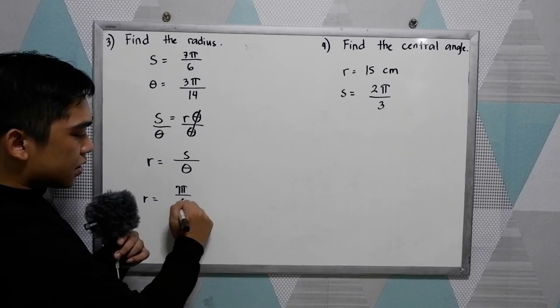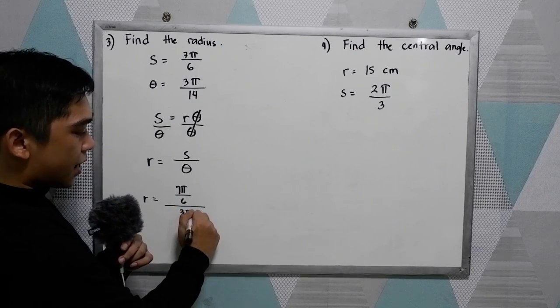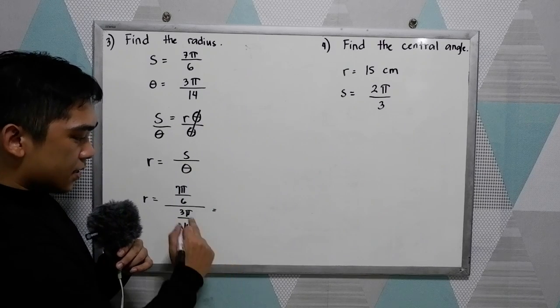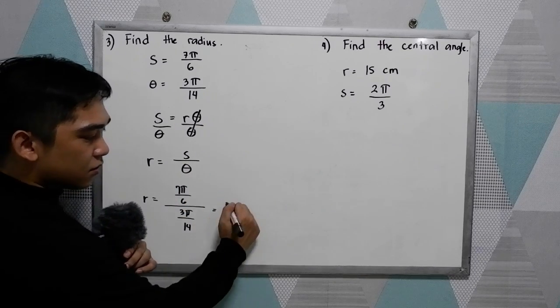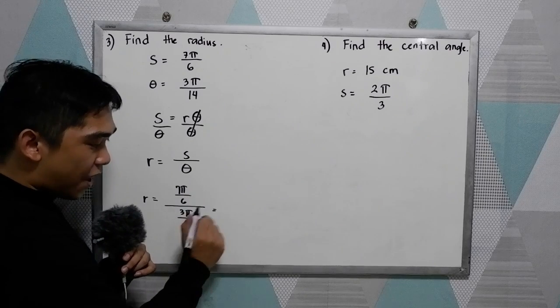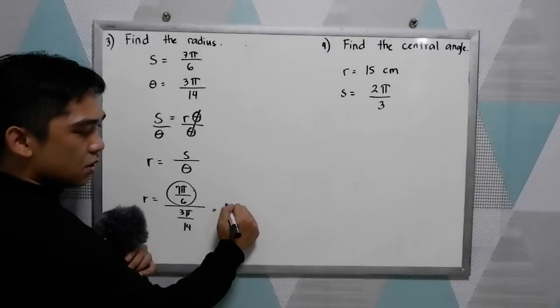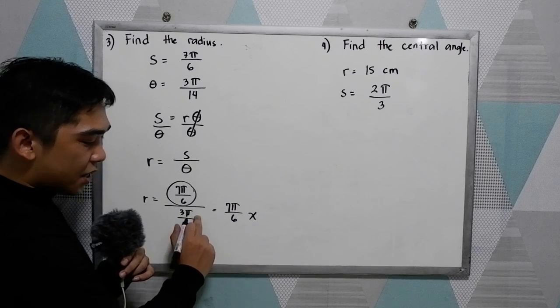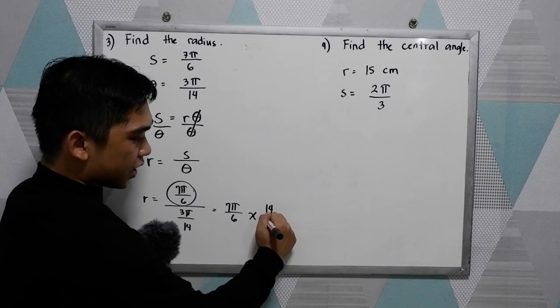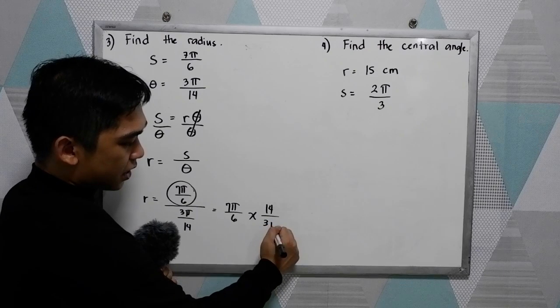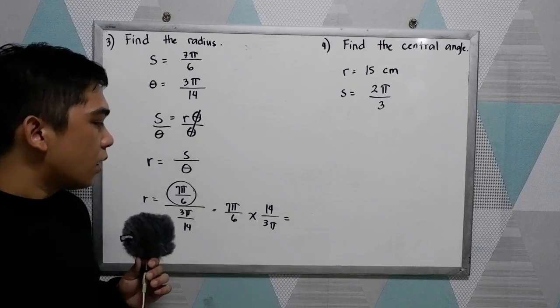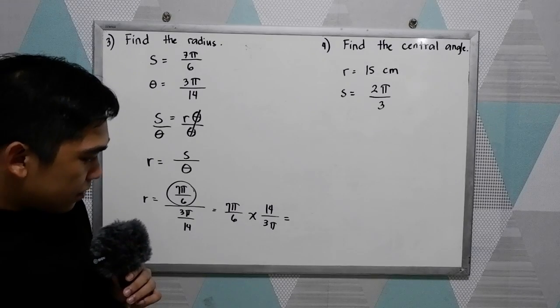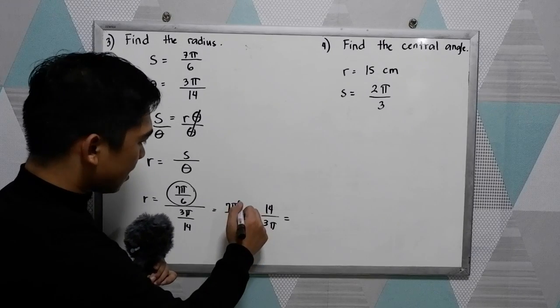After getting the formula we are now ready to substitute. So r is equal to s is 7 pi over 6 all over 3 pi over 14. Divide. So fraction in a fraction, copy the numerator 7 pi over 6 times the reciprocal of our denominator, 14 over 3 pi. Can we use cancellation method so pi will be cancelled out.